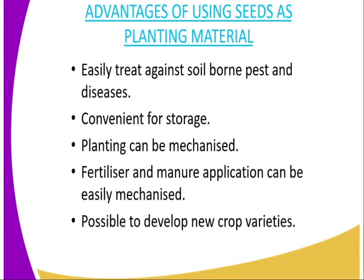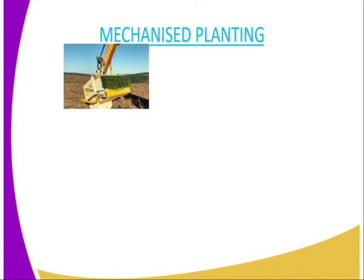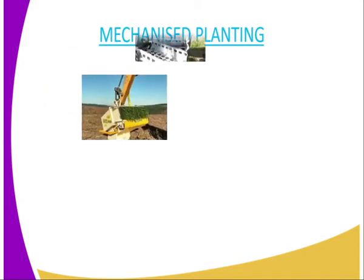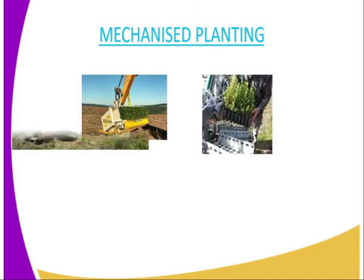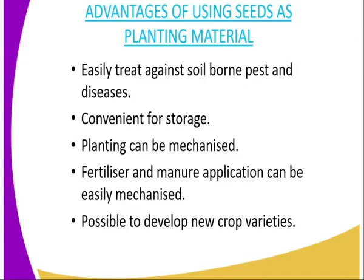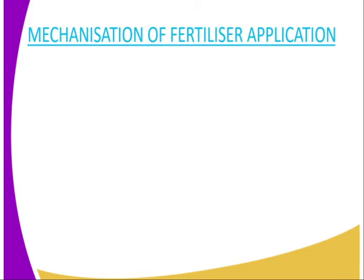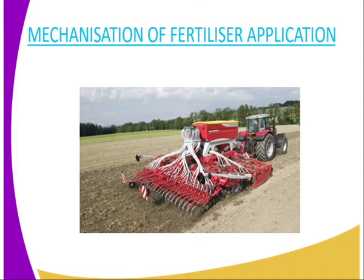Then the third advantage: planting material can be mechanized. Because seeds are of small size, you can mechanize the operation. As you can see, mechanized planting — during planting, you can use a machine. The fourth advantage is that fertilizer and manure application can also easily be mechanized. This is very important to note, because when you apply fertilizer together with the seed, it saves the labor that you would have used if the fertilizer was applied on its own.